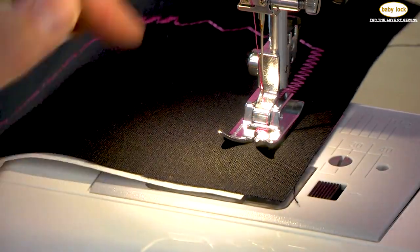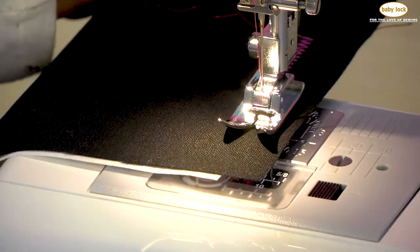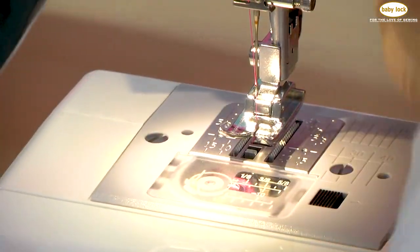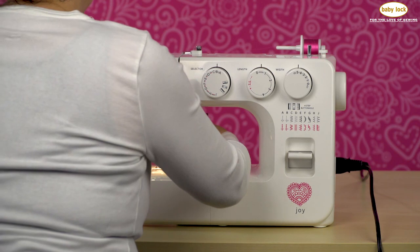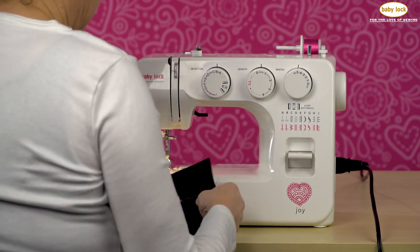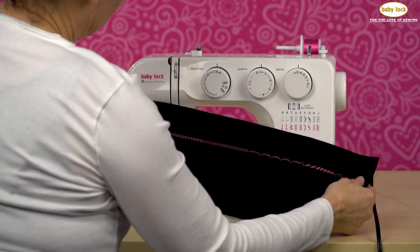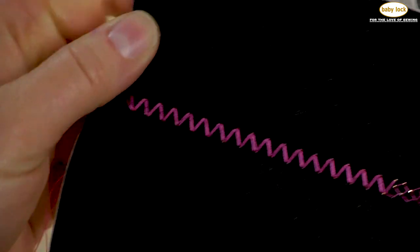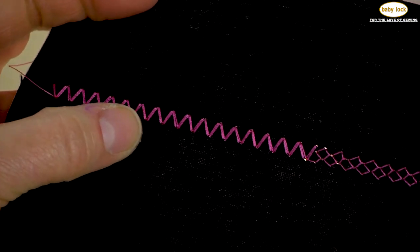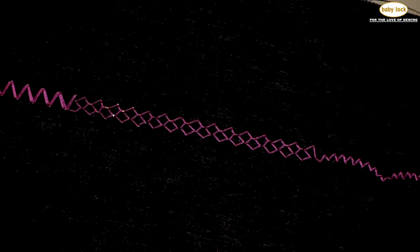Take my needle out of my fabric and now I'm ready to look at my stitch creations using that decorative thread in the needle and the decorative stitches on the Baby Lock Joy. Wow! You can see here is that rickrack stitch. Here is my smocking stitch.